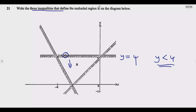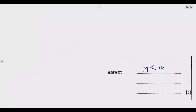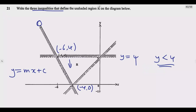Let us start with this line. It passes through two points: (6, 4) and (-4, 0). We use the equation of a line y = mx + c, so we need to find m first. Let me label this as equation two, and find the gradient.